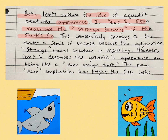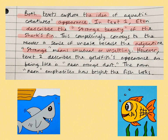This is the clever bit — this is where we earn our marks. Remember: the question said 'compare how two texts present an aquatic creature.' Here we're explaining how the writer presents the shark's appearance. 'Strange beauty' — that adjective 'strange' suggests there's something eerie or unsettling about the shark's appearance. It's almost an oxymoron. Looking at language and structure — that's our writer shaping meaning and effect.